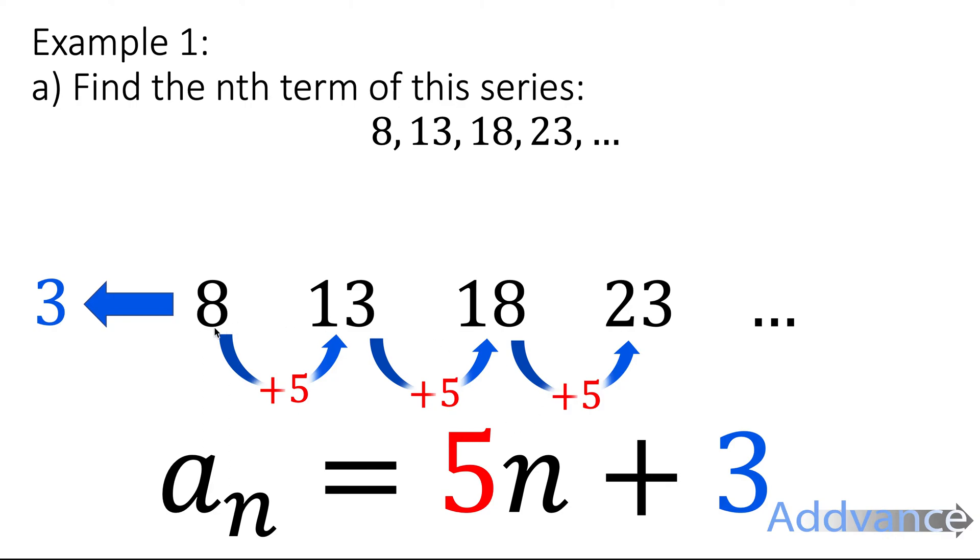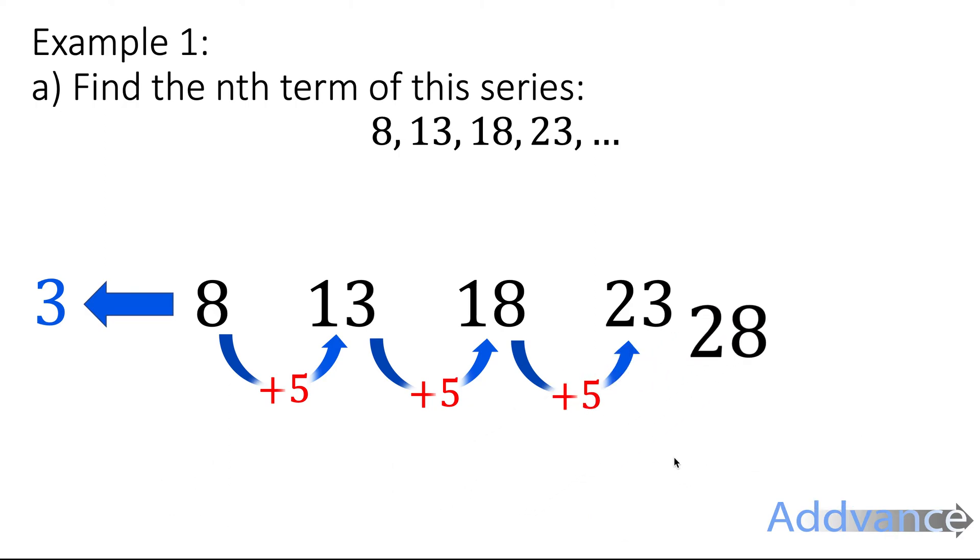And what this does is it tells you the number that is in any place in the sequence. For example, this is the first place. We put 1 in to this expression, we get 8 out. 2, 3, 4. And we could even put 5 in. So we're going to put 5 into this expression: 5 times 5 plus 3. And we will get 28. So 28 will be the 5th term.